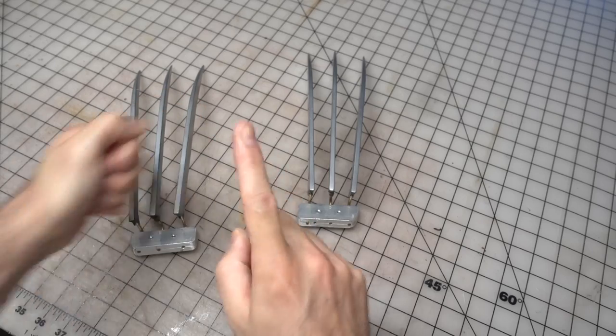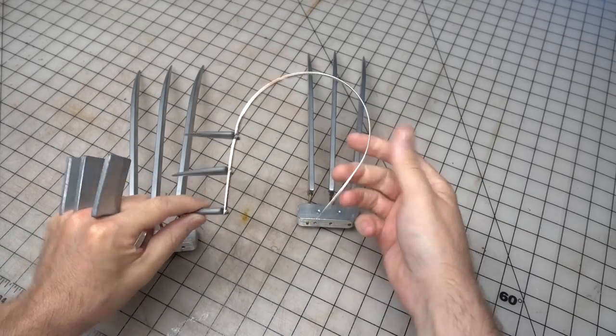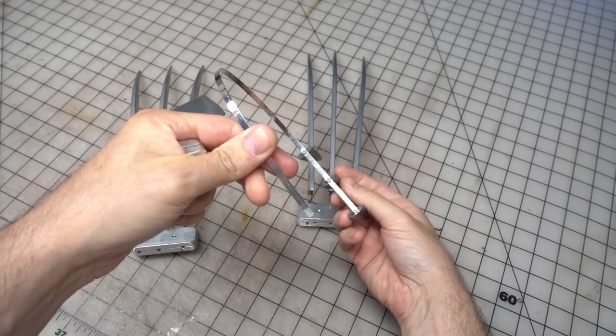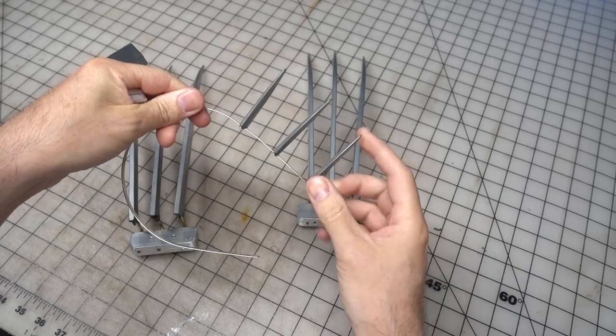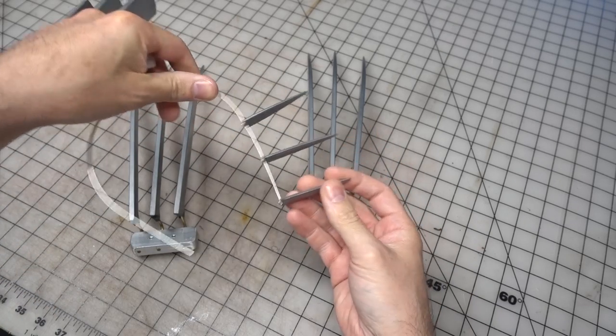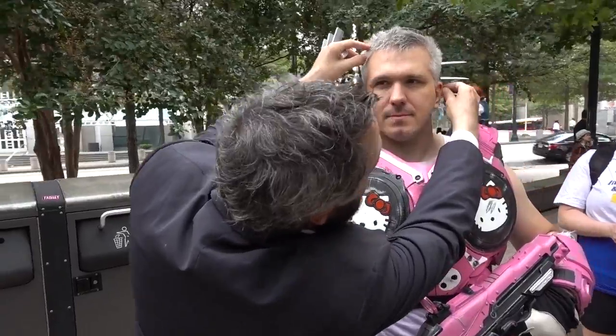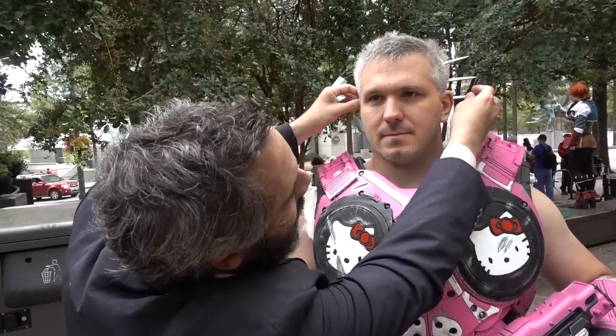But I went one step further and I made this! This is a headband that I drilled some holes in and I attached just the tip of a couple of the claws there so that I could place this over someone's head and it would look like the tips of the claws are poking out the other side of their head.